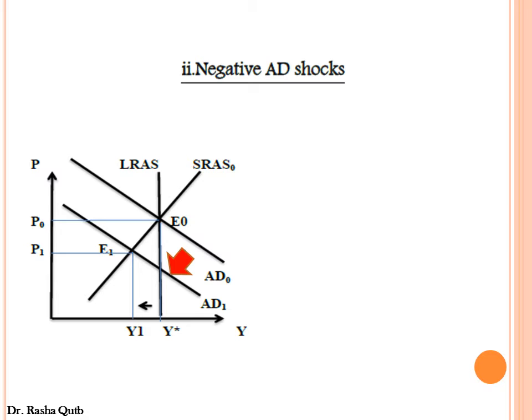Suppose the government adopts a contractionary fiscal policy by reducing government expenditures or increasing taxes. This causes the aggregate demand curve to shift leftward from AD-zero to AD-one. At point E-zero the economy experiences no gap, Y equals Y-star. Now the economy is producing below the potential level of output.